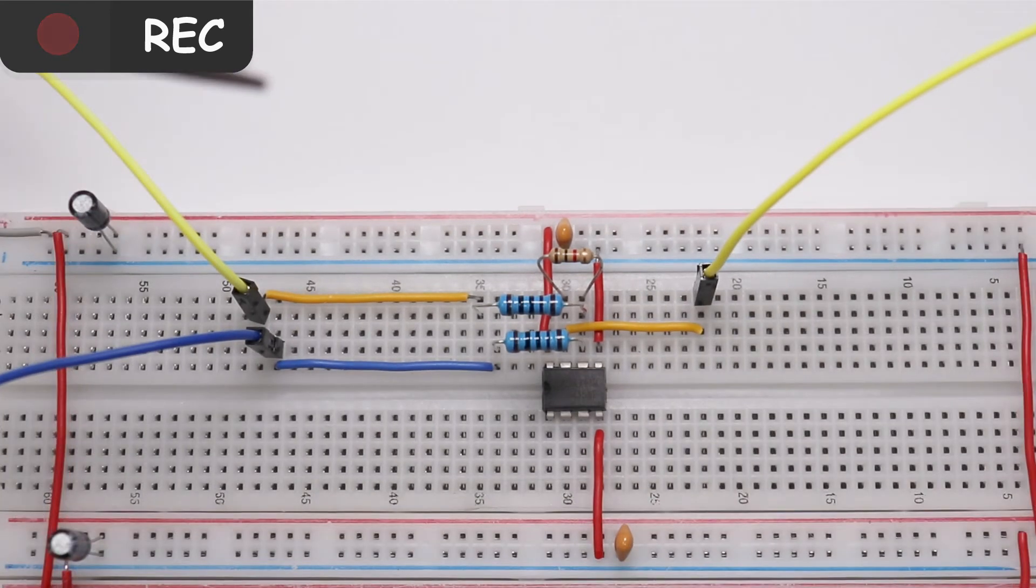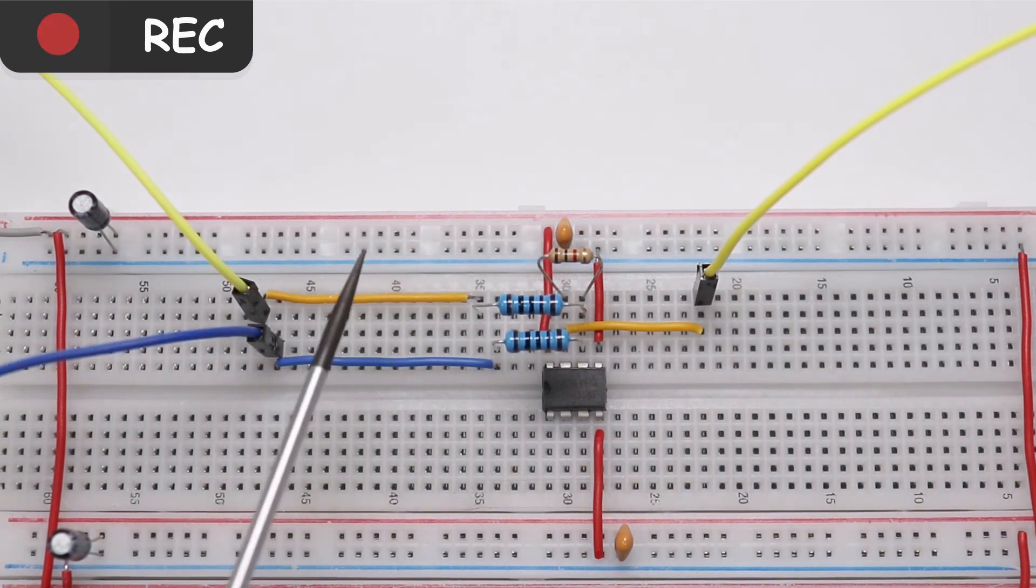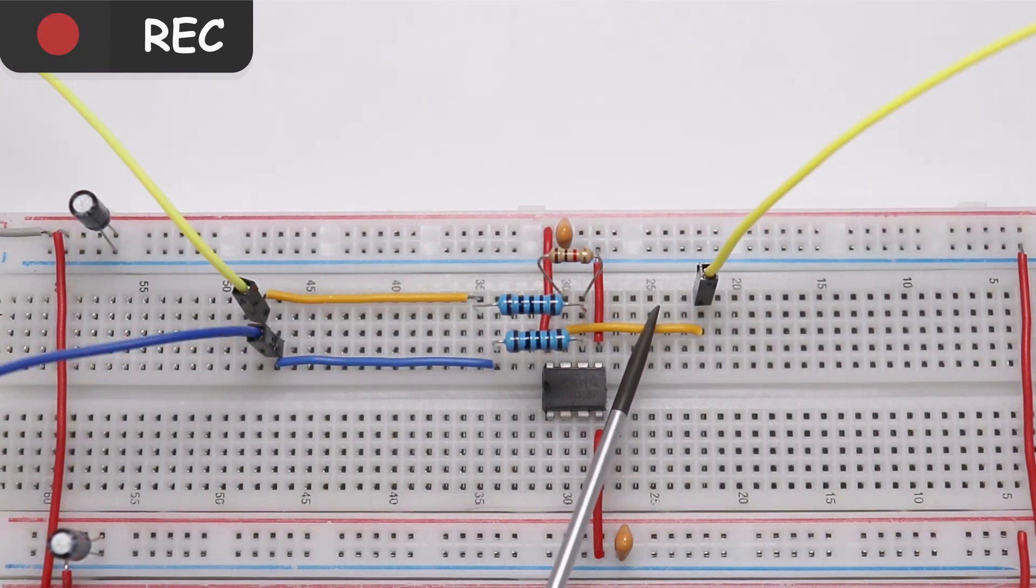For input 1, I chose a square wave with an amplitude of around 1.5 volts and a frequency of 1 kHz, whereas input 2 is just 5 volts DC that I wanted to add to our first signal so it shifts a little bit.